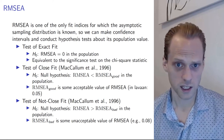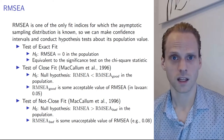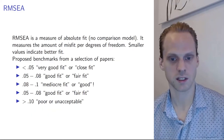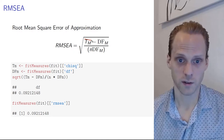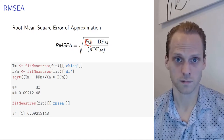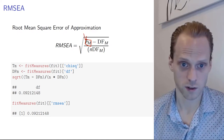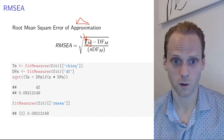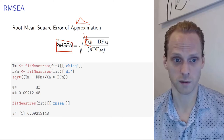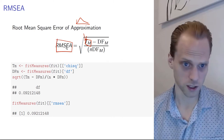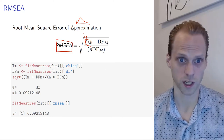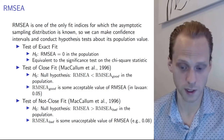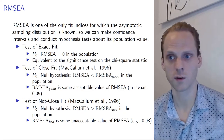The nice thing about the RMSEA is that we also know its sampling distribution, because the RMSEA is a direct function of the chi-square. Since it's a direct function of the chi-square, which is chi-square distributed, we also know the distribution of the RMSEA. It turns out this has a non-central chi-square distribution, which allows us to test hypotheses with the RMSEA just like we do with the chi-square test.